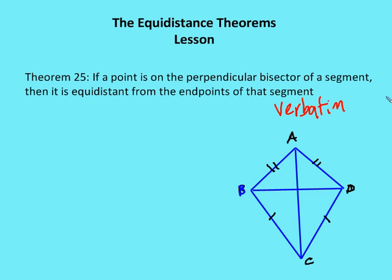So let's move on to theorem 25. If a point is on the perpendicular bisector of a segment, then it is equidistant from the points of the segment. So if I have point A and point C, and I know that AC is the perpendicular bisector of BD.